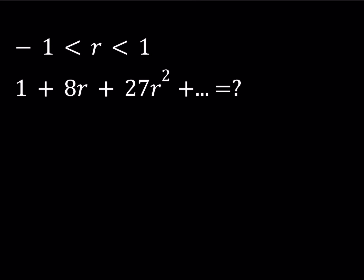We have a sum that kind of looks like a geometric series, but the coefficients are not consecutive integers — they are perfect cubes. So we have 1 cubed, 2 cubed, 3 cubed as coefficients, and so on and so forth.